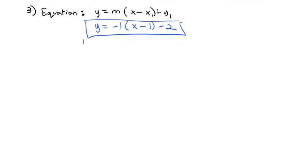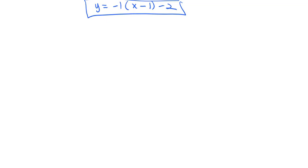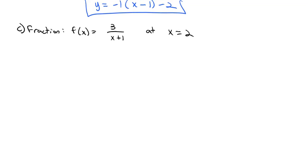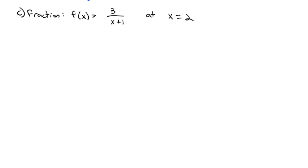Let's try another example working through both formulas — this time a fraction. Let f(x) = 3/(x + 1), and we want the slope of the tangent line at x = 2. First, we find the y-coordinate: f(2) = 3/(2 + 1) = 3/3 = 1. So we have the point (2, 1), where a = 2 and f(a) = 1.